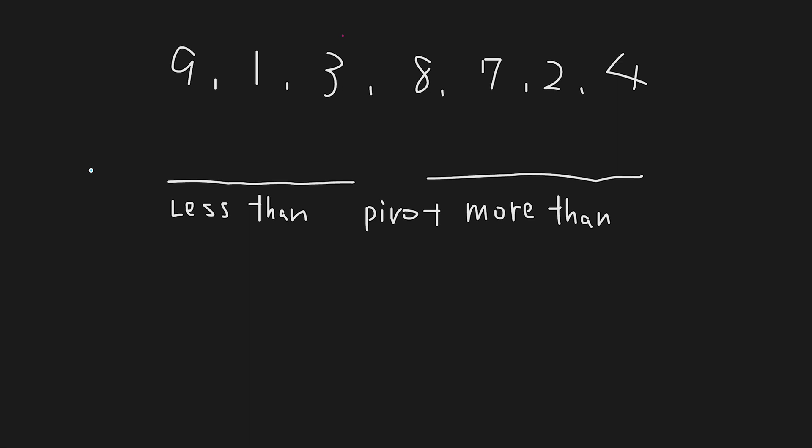The quicksort algorithm takes an unsorted sequence and sorts it out. In this example, we start off by taking the last index as a pivot and divide the unsorted sequence into two parts: numbers less than the pivot and numbers more than the pivot. Let's begin. We take the last index as the pivot, which is 4.